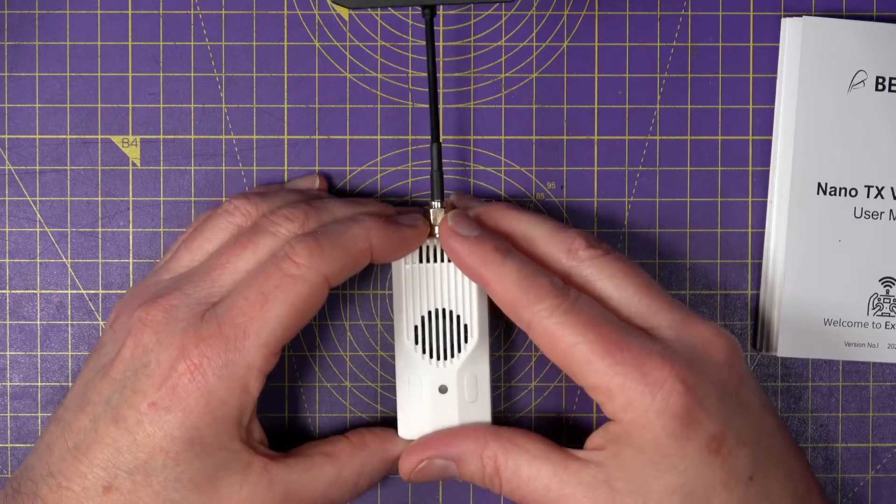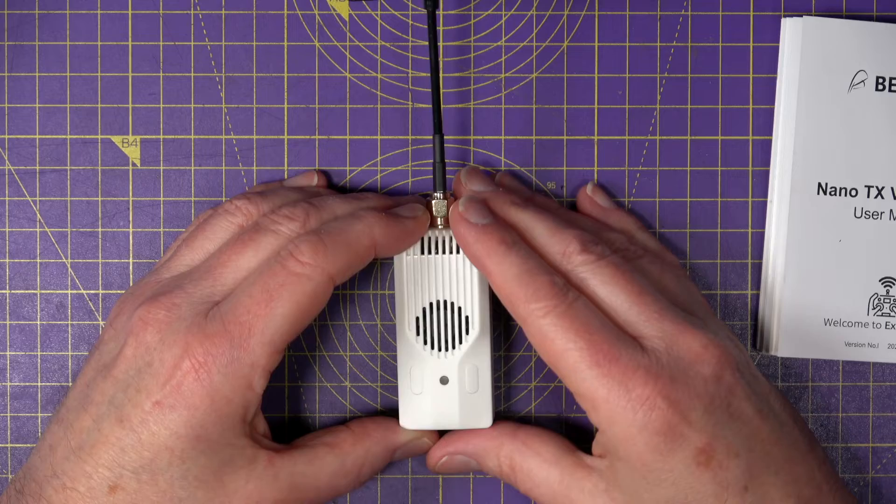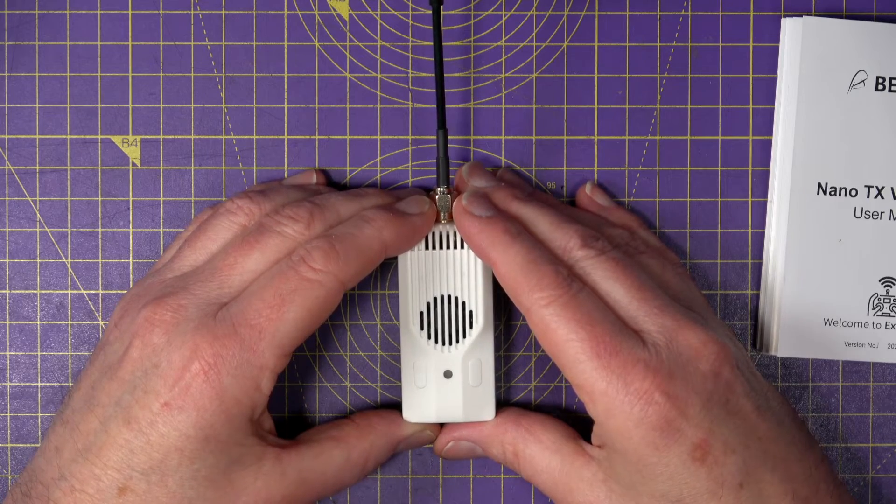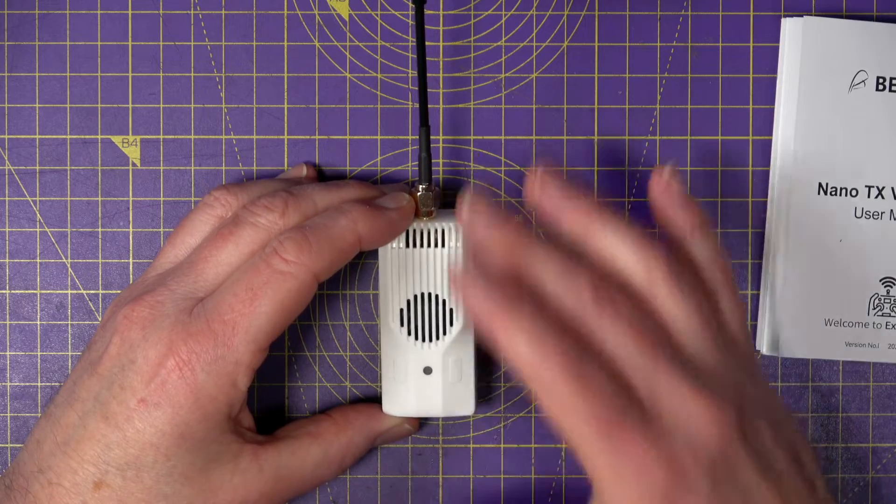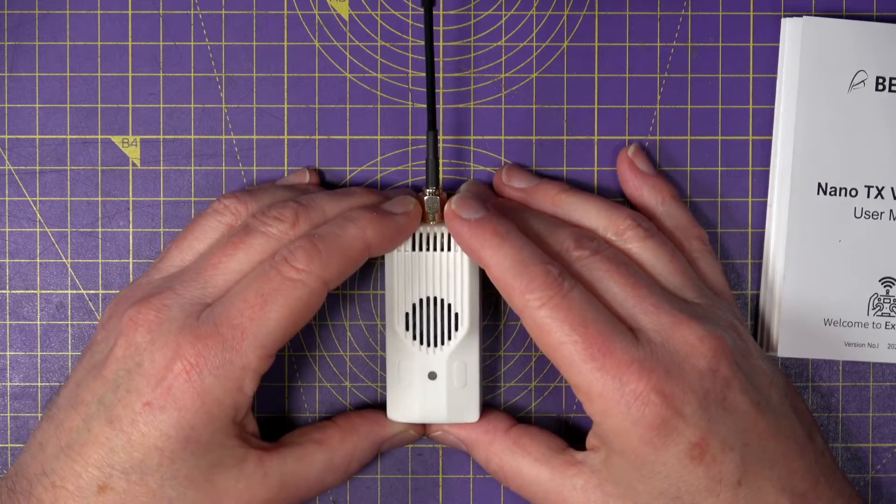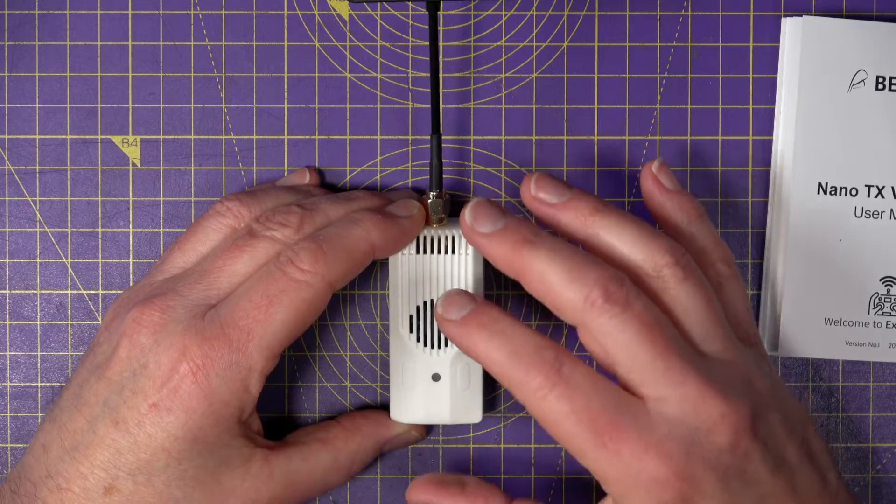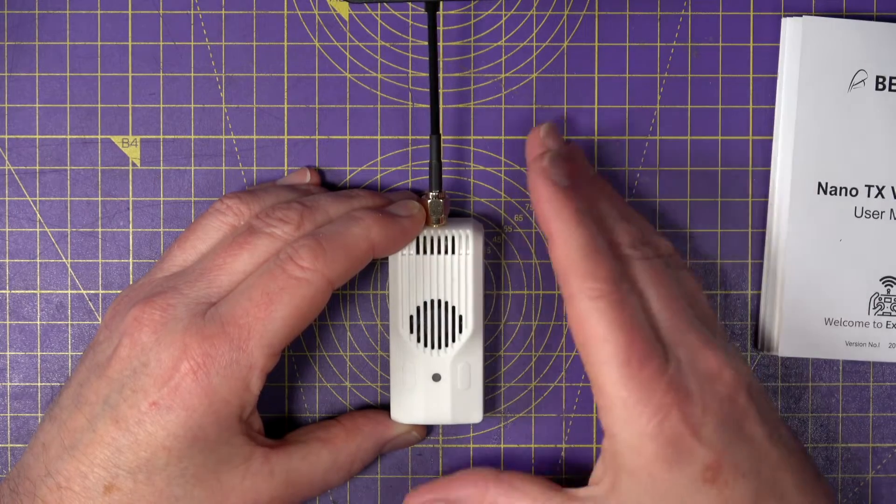I've got this 2.4GHz version, but it's also available in 868 and 915MHz versions to suit your particular region. The 2.4GHz version has switchable RF power between 25mW and 1W.